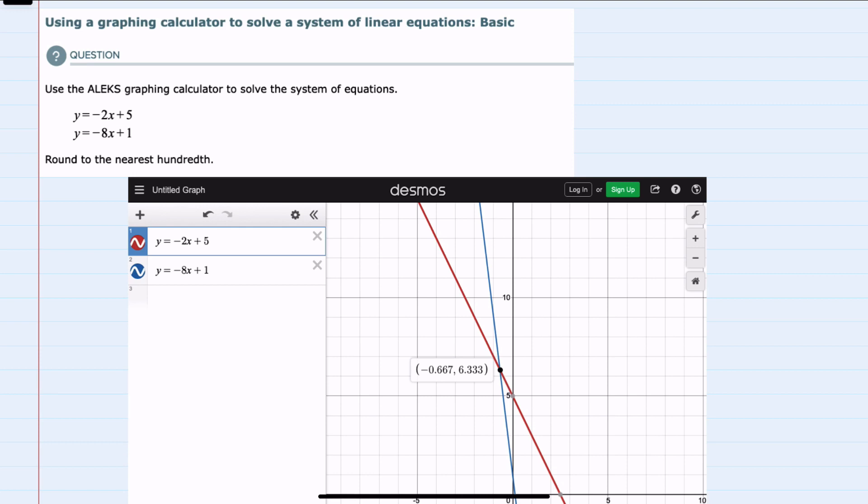Inputting each of these two equations into Desmos displays the intersection of the two lines as having the x value negative 0.667 and the y value of 6.333.